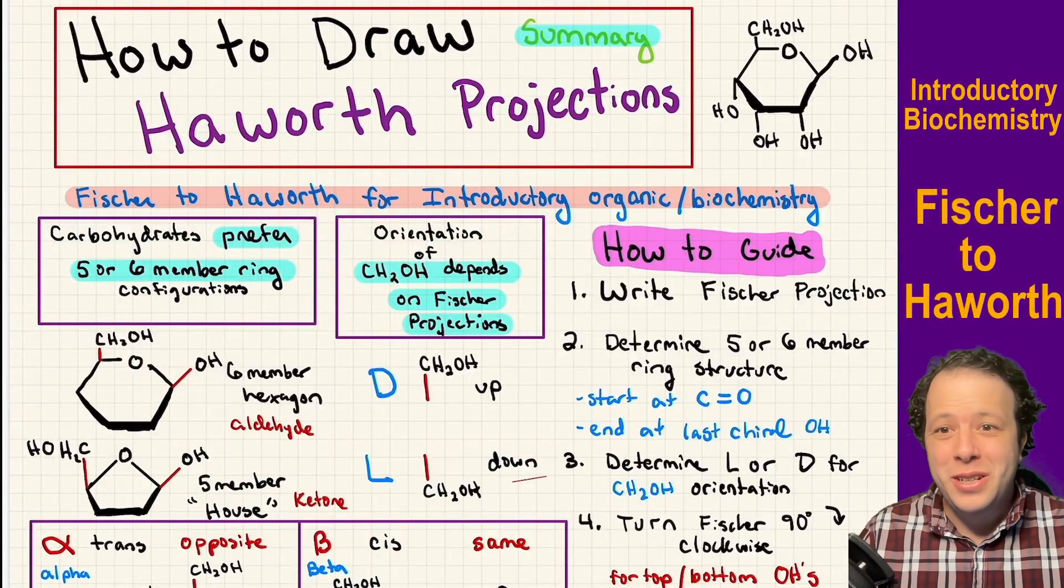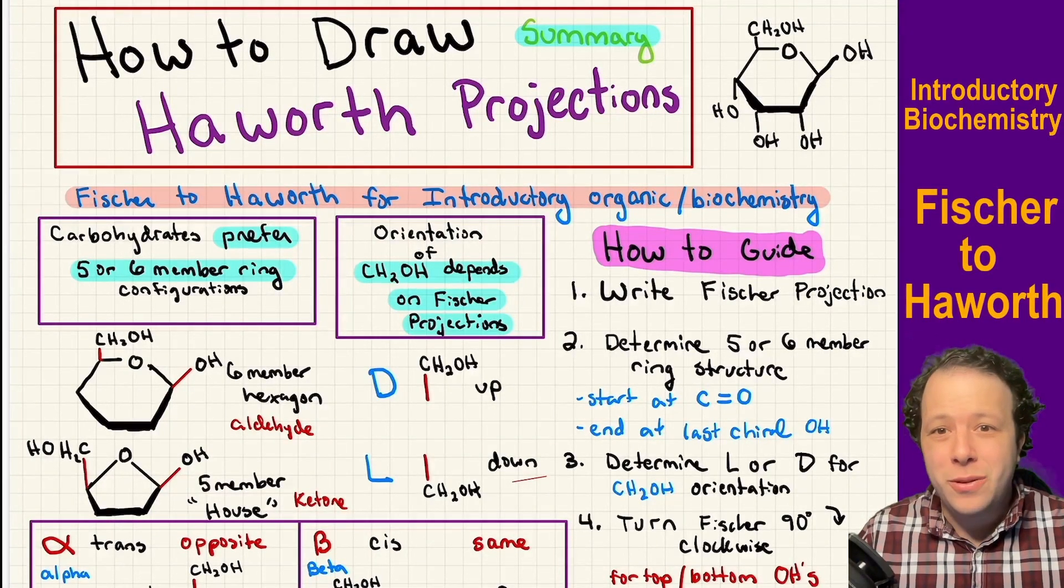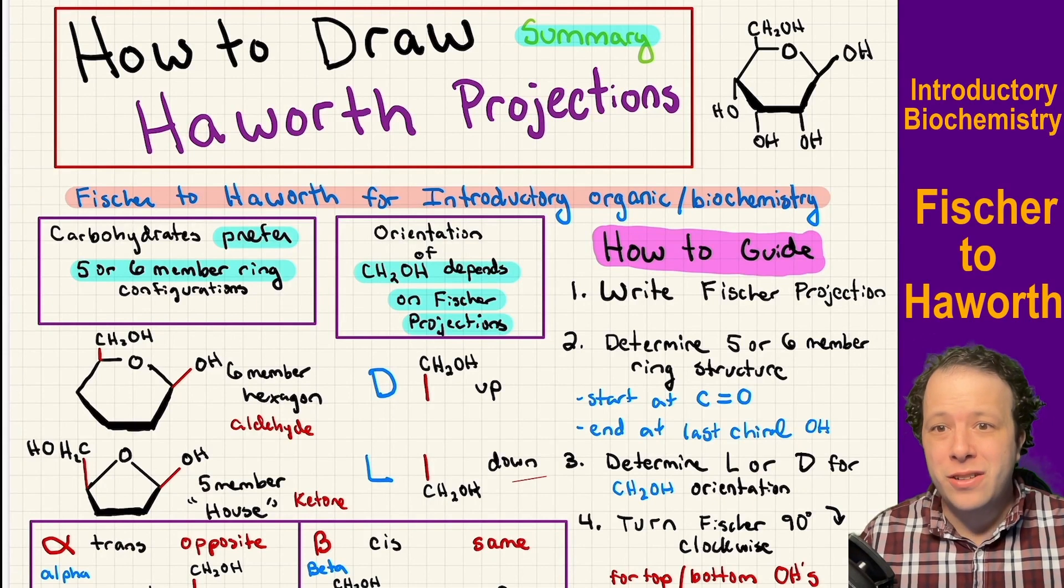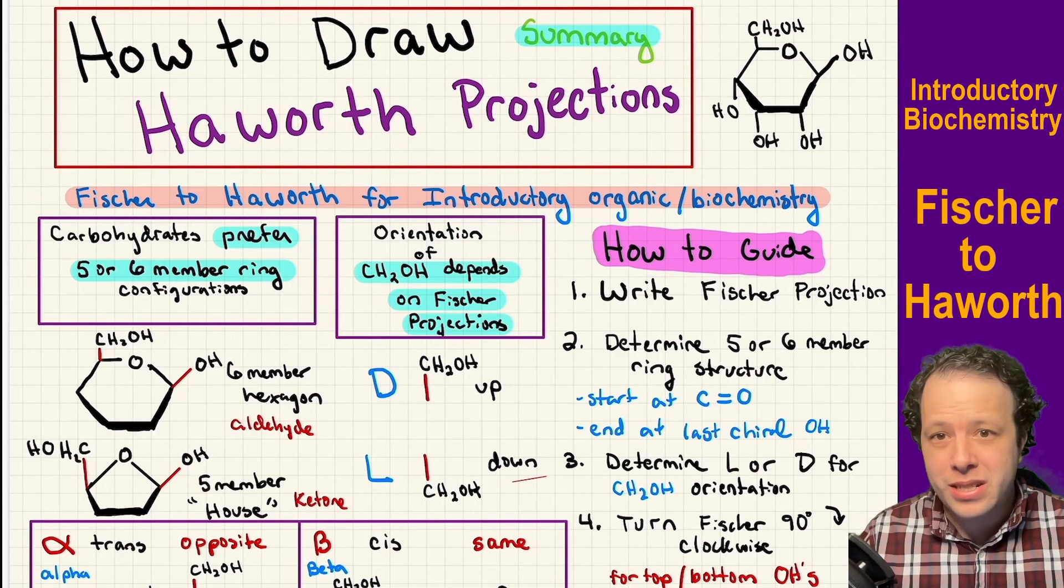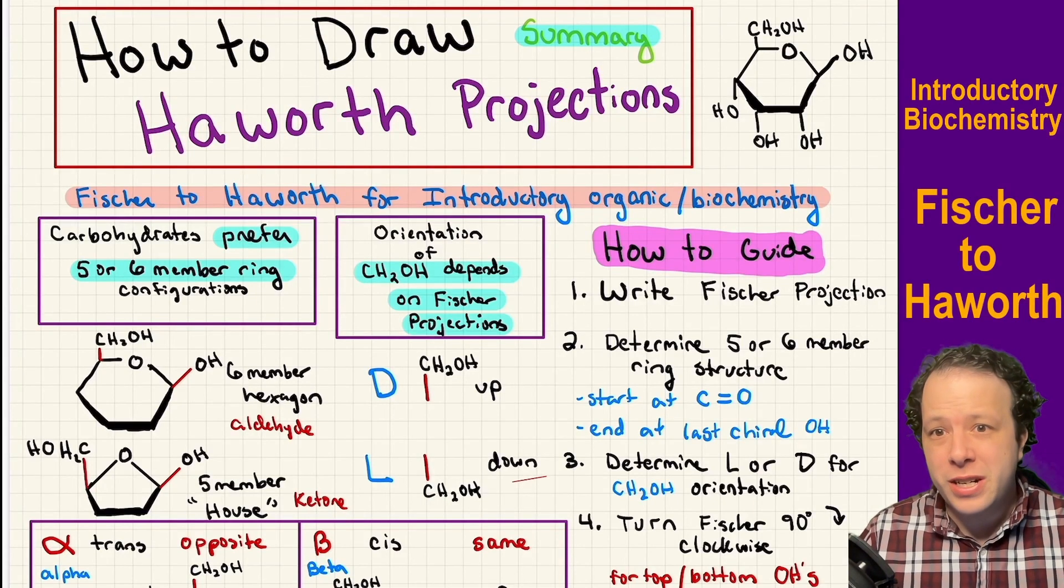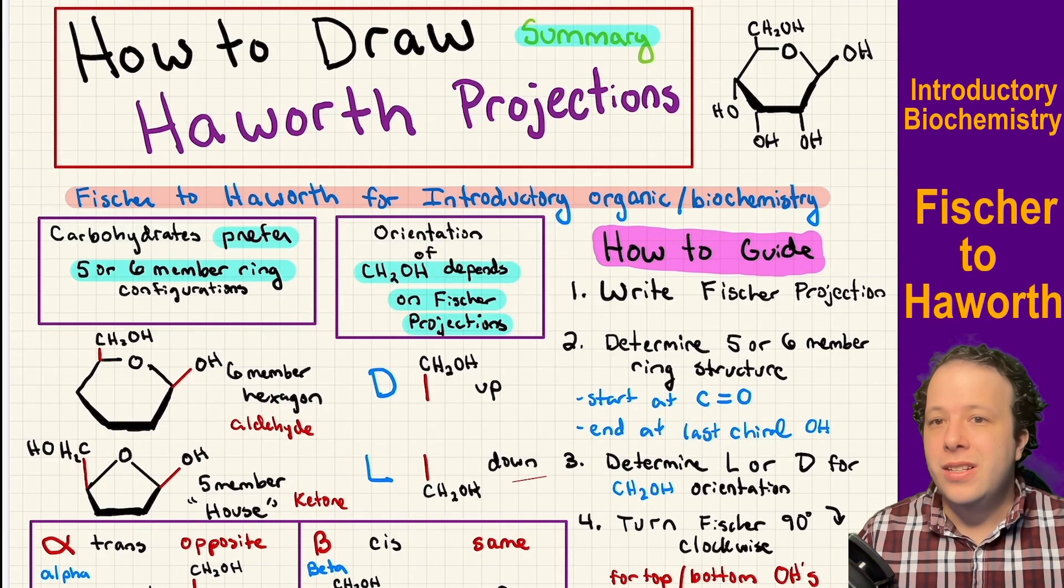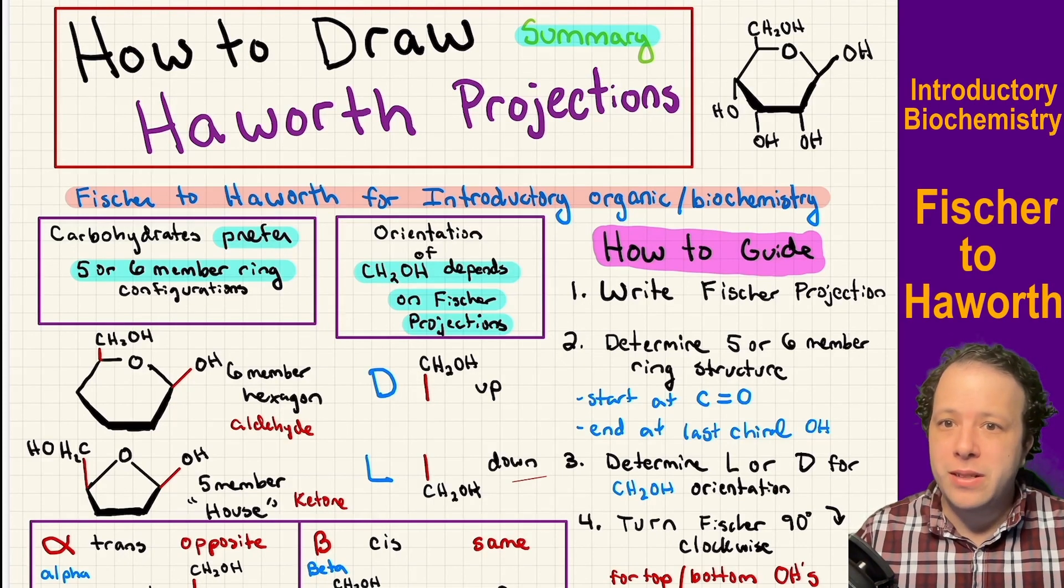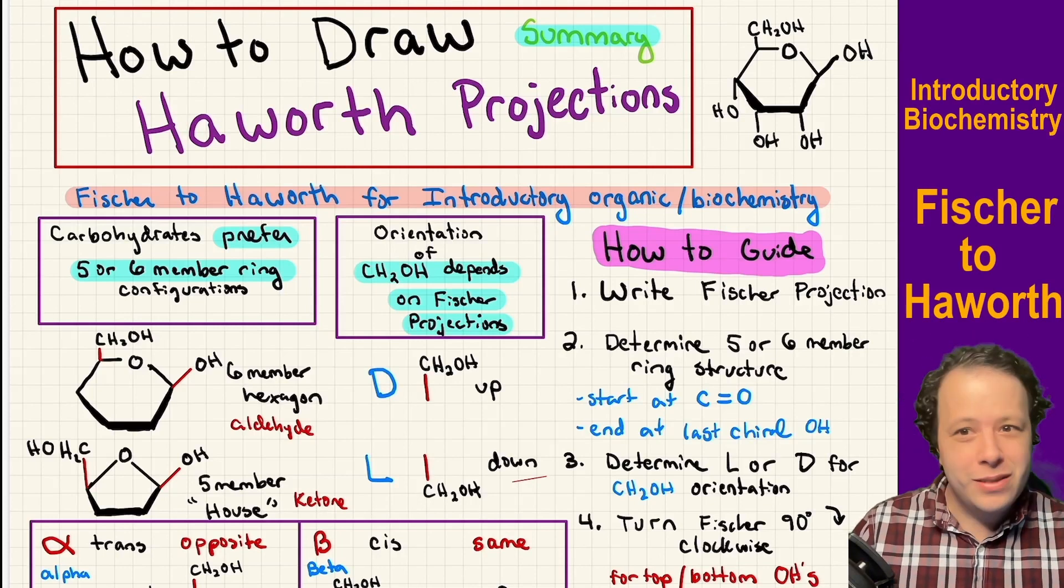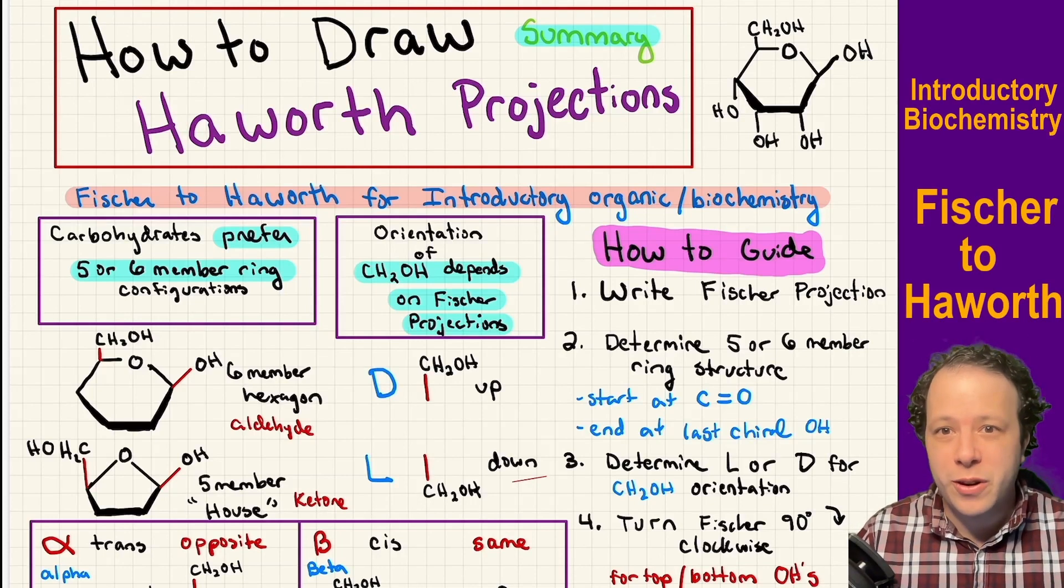Hi, and welcome back to another video with Dr. Dan. Today we're going to show how to go from a Fischer projection of a ketose to a Haworth projection, meaning that we have a ketone in that structure. In my last video, I talked about going from Fischer to Haworth, but I wanted to do a quick summary because it's a little bit harder.